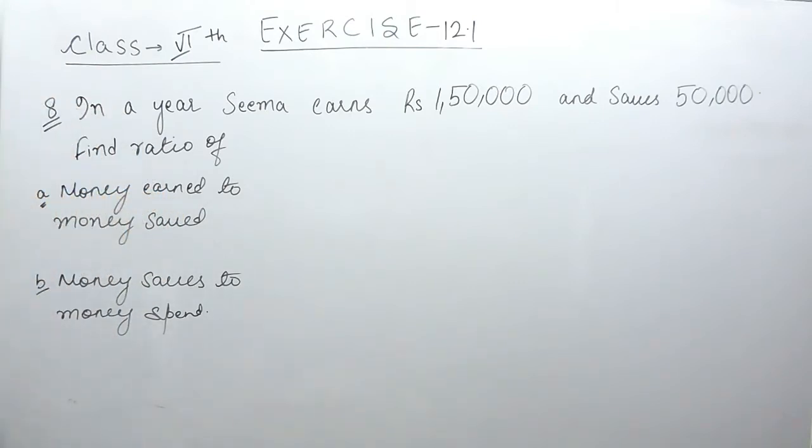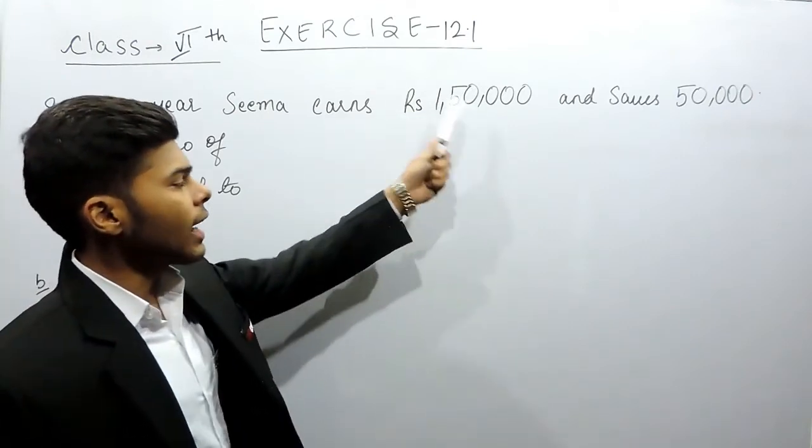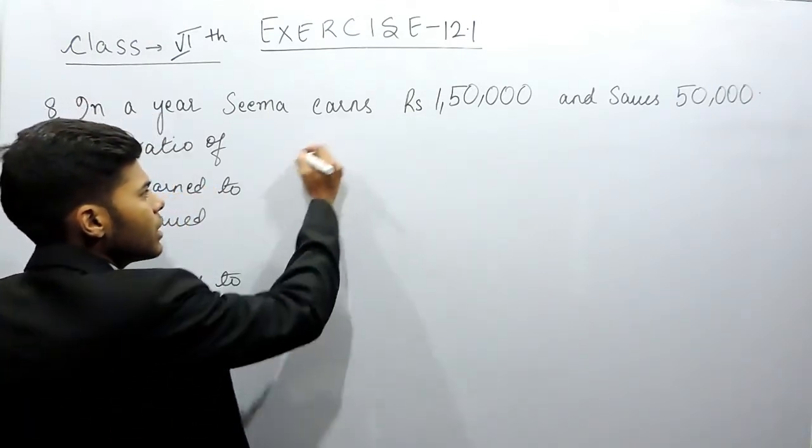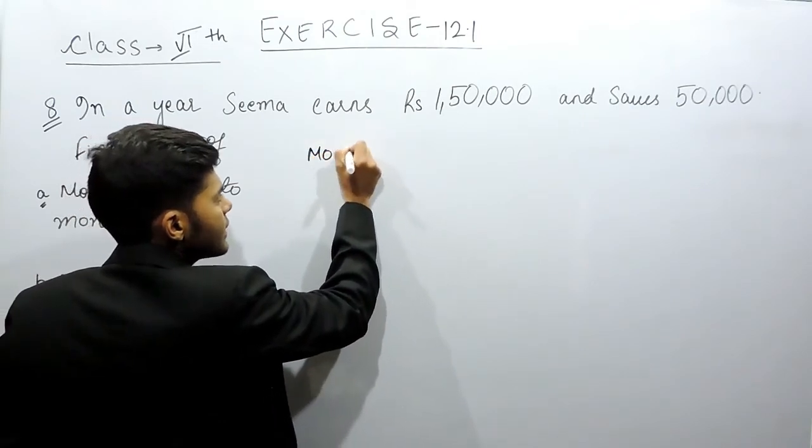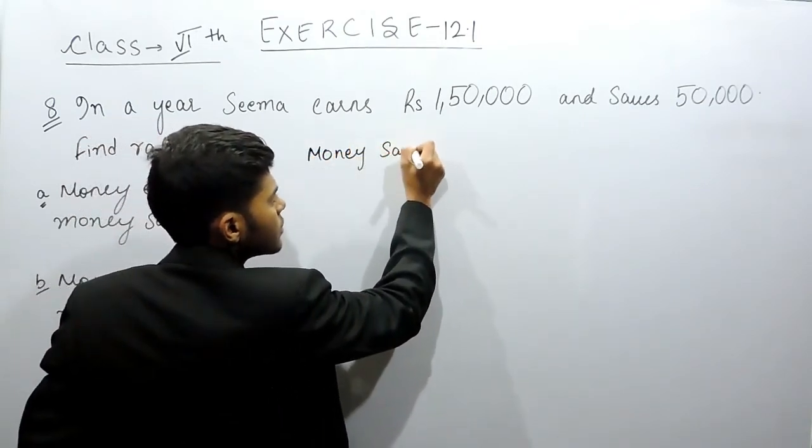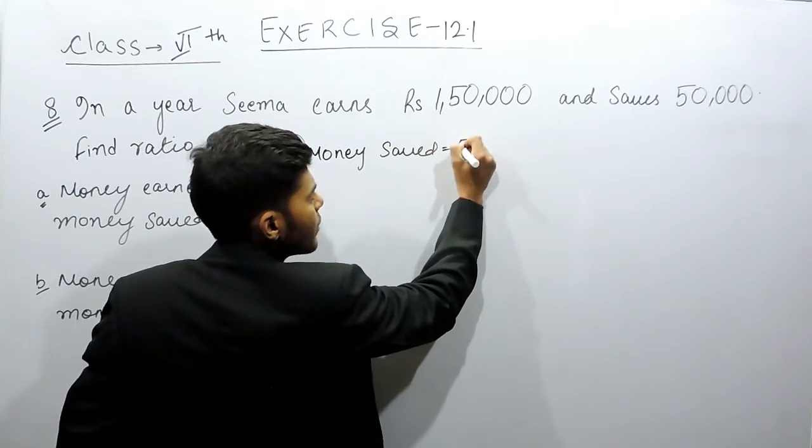So we have to find the ratio of money earned to money saved and money saved to money spent. First of all, as we know that the total money that she earns is Rs 1,50,000, we are given money saved is equal to Rs 50,000.